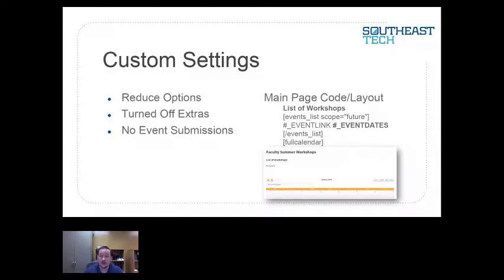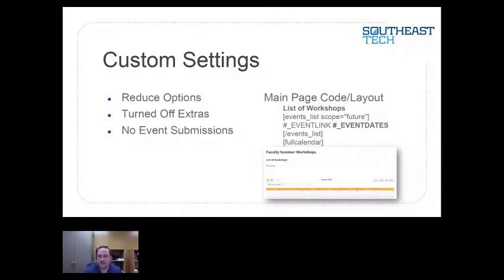On the right, I added a custom code to the main page. When you click in and get signed in, this is the first page you go to. It will list upcoming events using a custom event link for the future — I would not have all of the past events listed as available workshops. If it's already been done, it's not listed. Then I had the events listed for them as part of that. Then the calendar at the bottom — that's the WP Full Calendar I mentioned earlier. It's nice and easy to sort to find what you need.